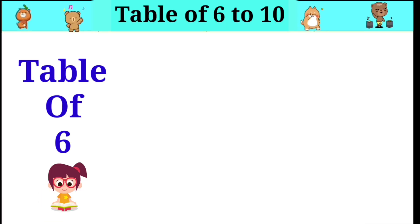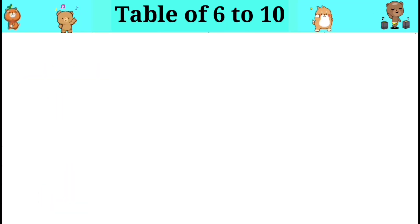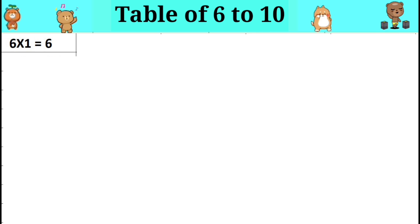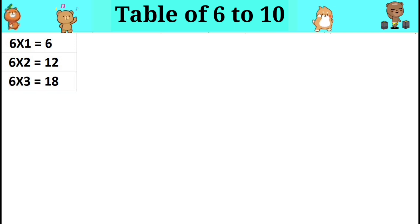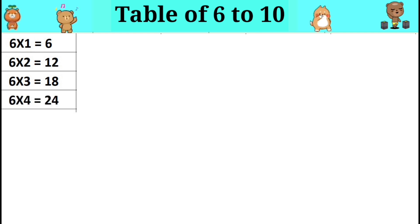Table of six to ten. Six ones are six. Six twos are twelve. Six threes are eighteen.